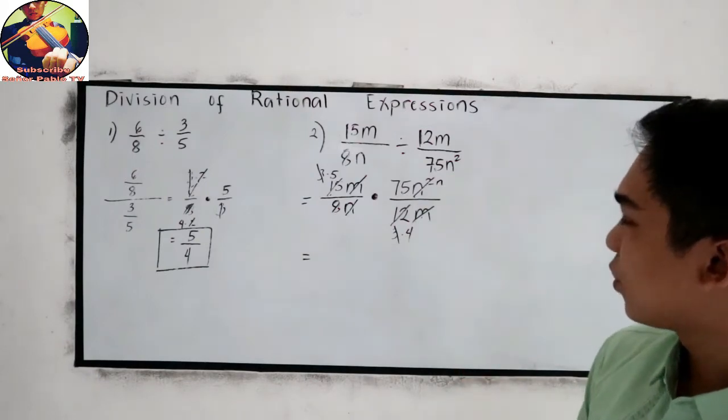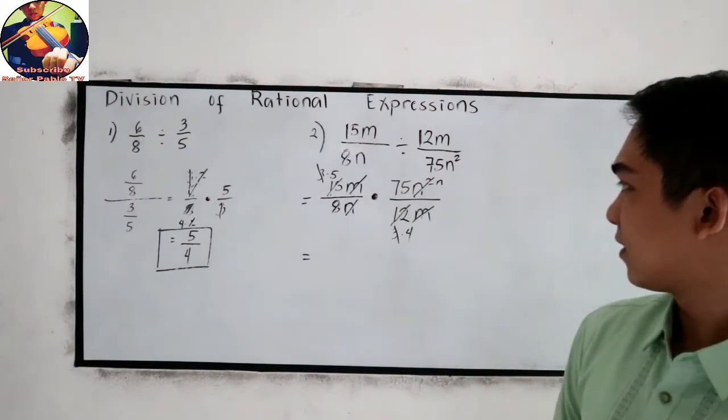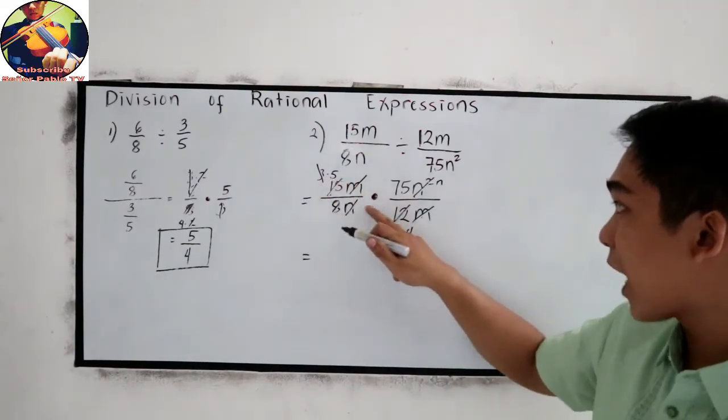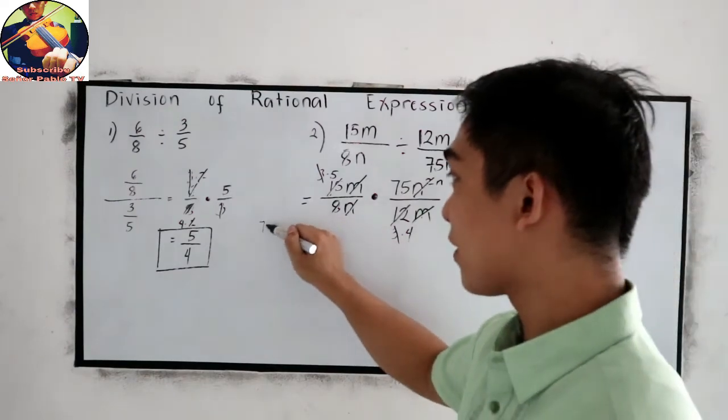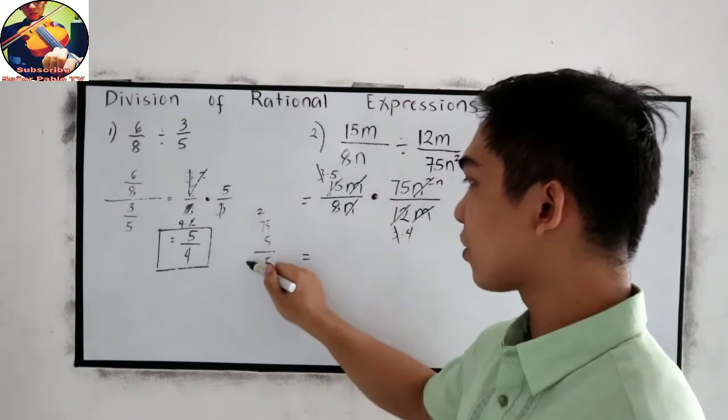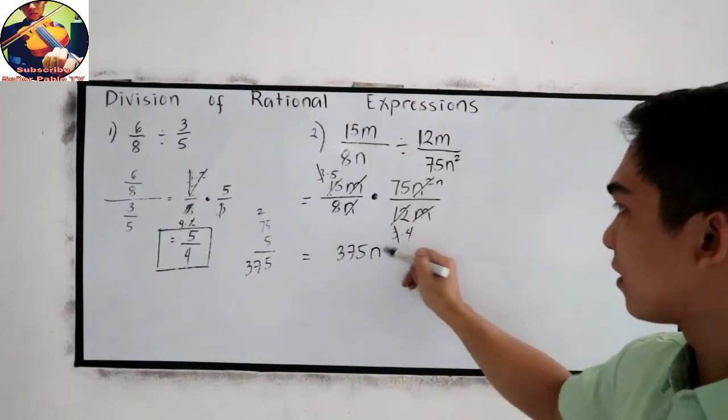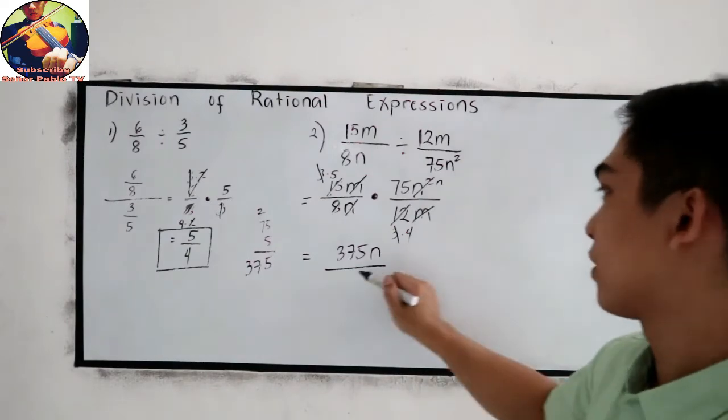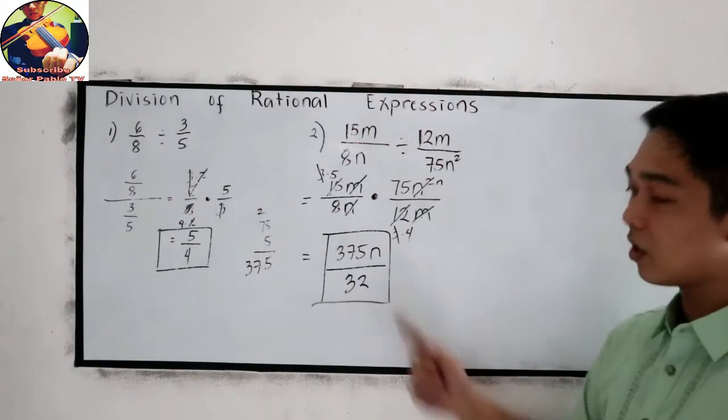Do we still have numbers to be canceled out? Let's now find our final answer. 5 times 75, that is 75 times 5. So 5, carry 2, 35, 36, 37. So 375. We have n all over 8 times 4: 8, 16, 24, 32. And this is now our final answer: 375n all over 32.